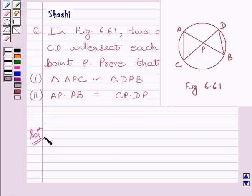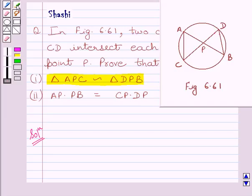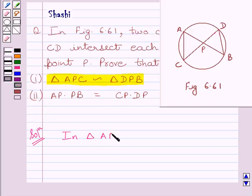In the first part of the question, we have to prove that triangle APC is similar to triangle DPB. So we can write in triangle APC and triangle DPB.